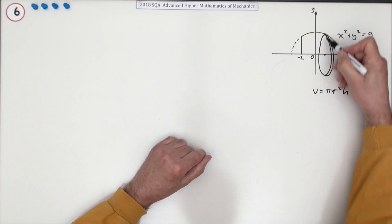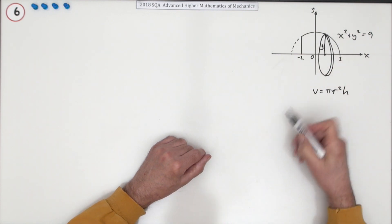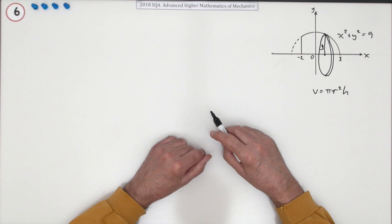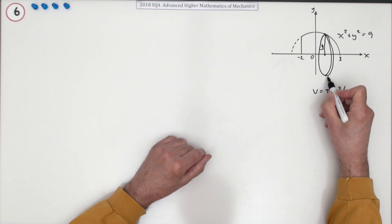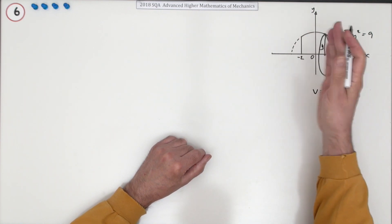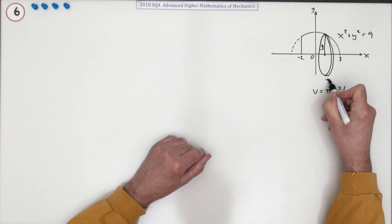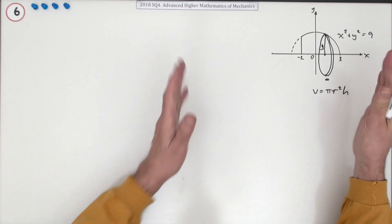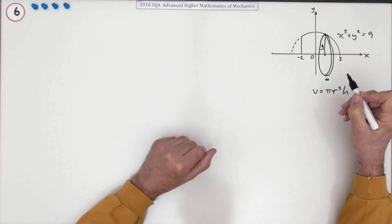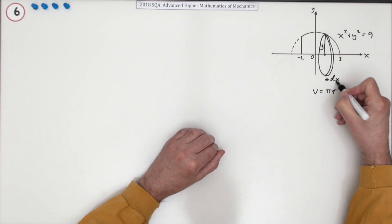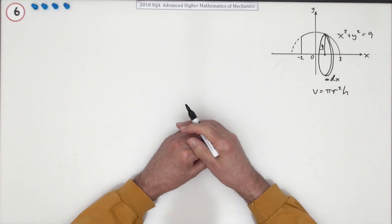The radius of that cylinder will be the y-coordinate for any given value of x. And the thickness of that cylinder just depends on how many slices you put it into. And in the case of integration, you make the slices infinitesimally small. So that will be a dx, a very small difference in the x-coordinates.